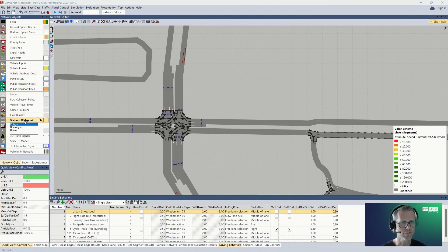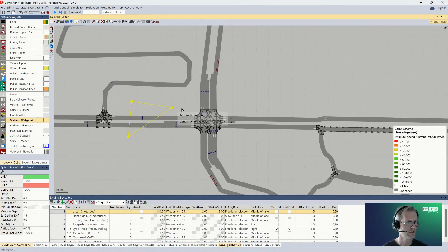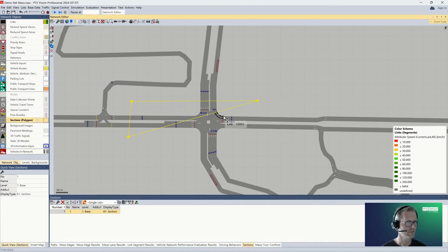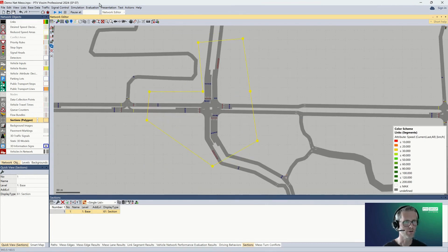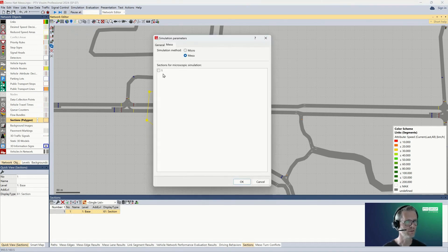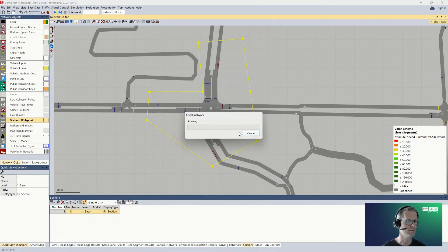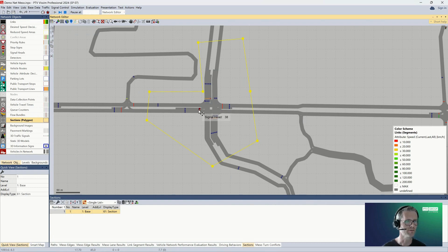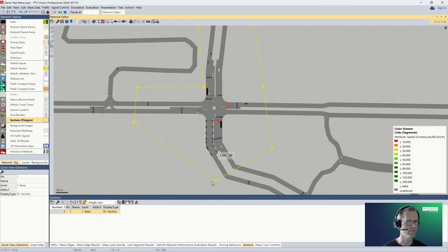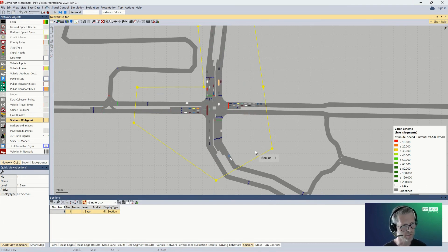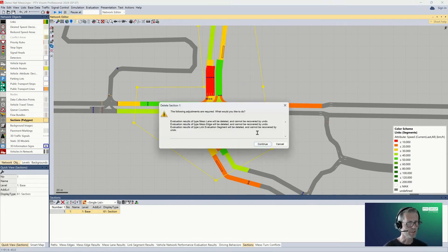Let's find the sections in the network objects. Let's select menu and then define a section. I will need a few more points there. Let's say I want to have this part of the network simulated microscopically. So I go back to simulation parameters and I switch to meso already and I activate this section for microscopic simulation and confirm. Then when I run the simulation, after a few seconds when the vehicles arrived to this intersection, I will see vehicles moving but only in this microscopic section, because only this part is simulated microscopically and visualized. So that's the easy way how it can be done.